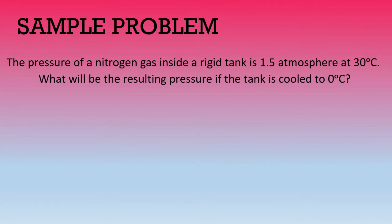Now, let's try to solve this sample problem. The pressure of a nitrogen gas inside a rigid tank is 1.5 atm at 30 degrees Celsius. What will be the resulting pressure if the tank is cooled to 0 degrees Celsius?